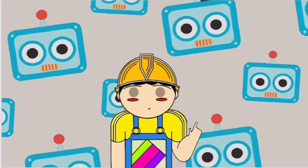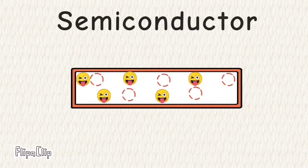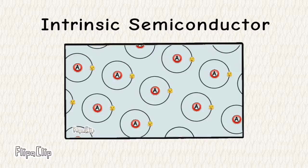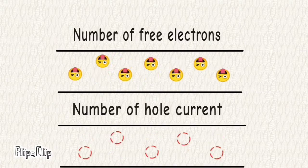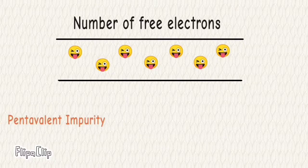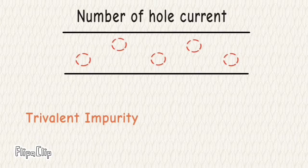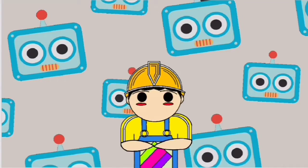Semiconductor के अंदर जो current conduction है उसकी flow को increase करना — क्यूंकि intrinsic semiconductor के अंदर जो current conduction है वो बहुत कम होता है, जो किसी electronic application के लिए अच्छा नहीं है। इसके लिए या तो number of free electrons की amount बढ़ाई जाती है, या number of hole carriers की amount बढ़ाई जाती है। Free electrons बढ़ाने के लिए pentavalent impurity का इस्तेमाल होता है जिसके पांच valence electrons होते हैं, और hole current बढ़ाने के लिए trivalent impurity का, जिसके तीन valence electrons होते हैं।